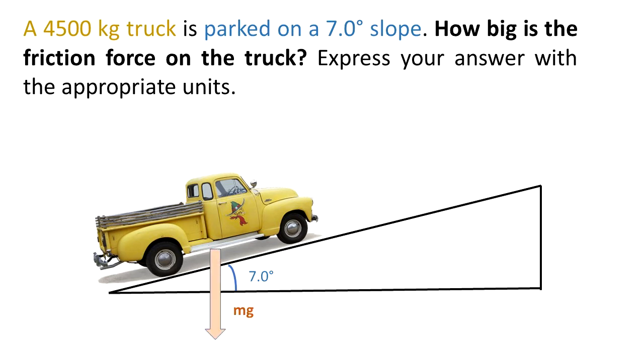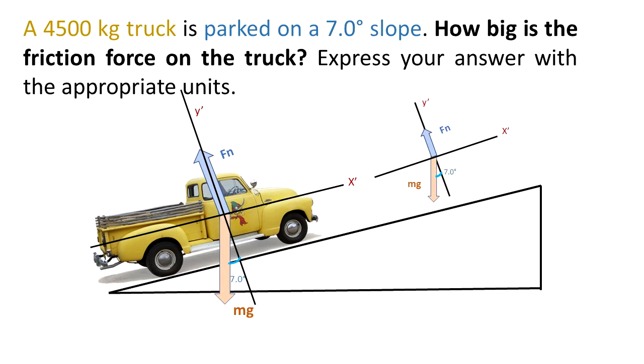We know that Mg is going downwards and Fn is going up but perpendicular to the plane. So as you can see there is an x' and a y' plane. The x' is parallel to the ramp and the y' is perpendicular to the ramp.